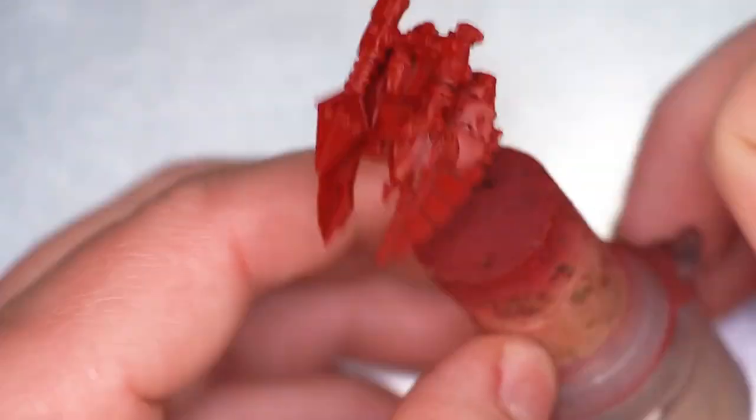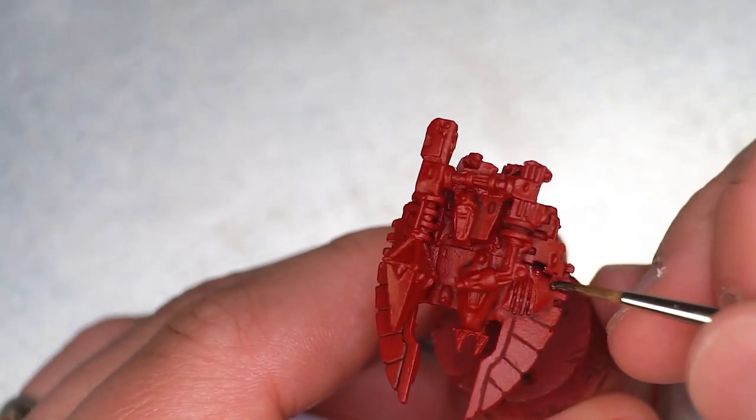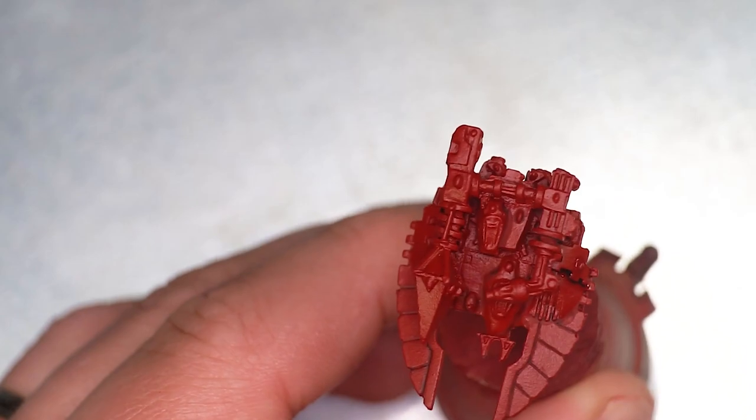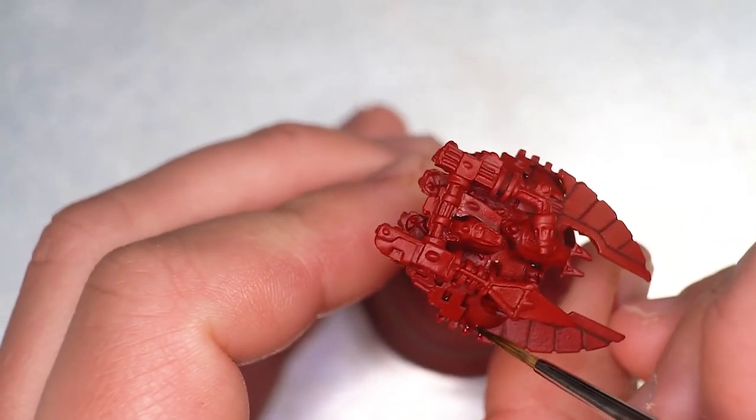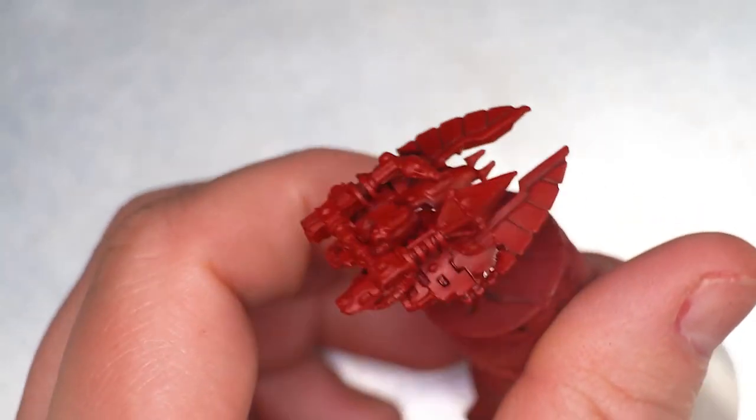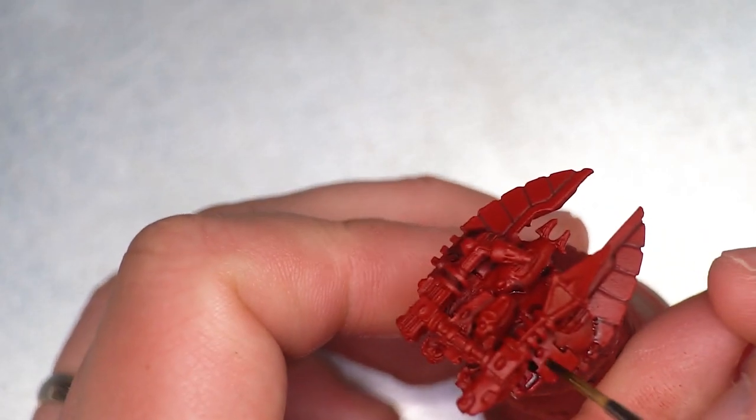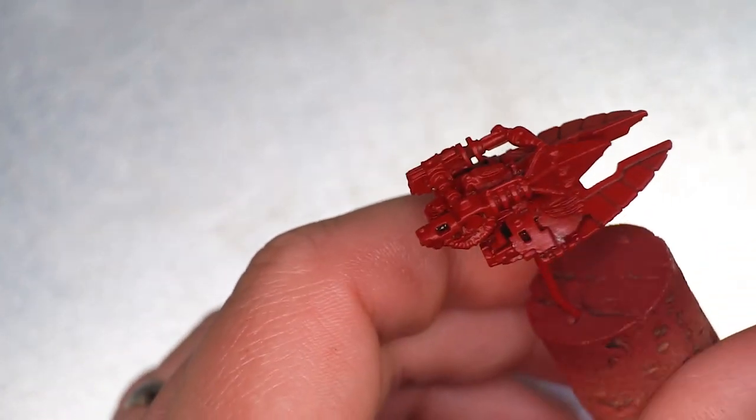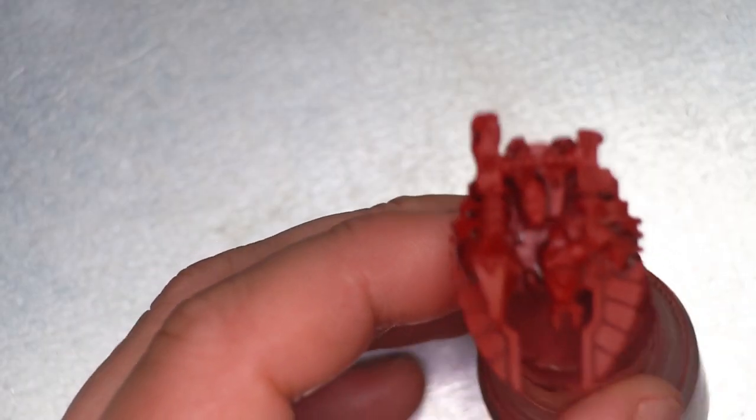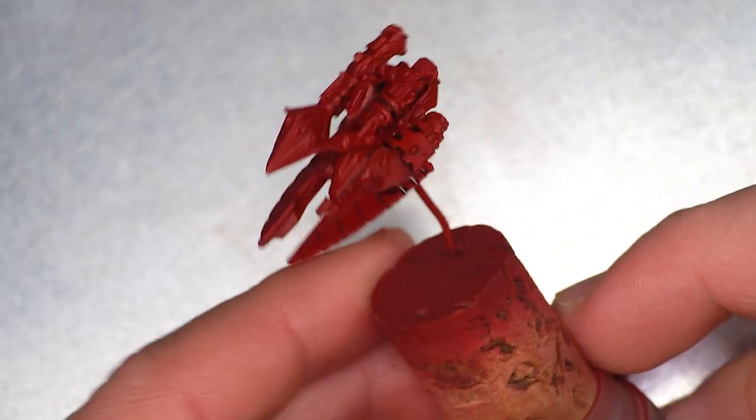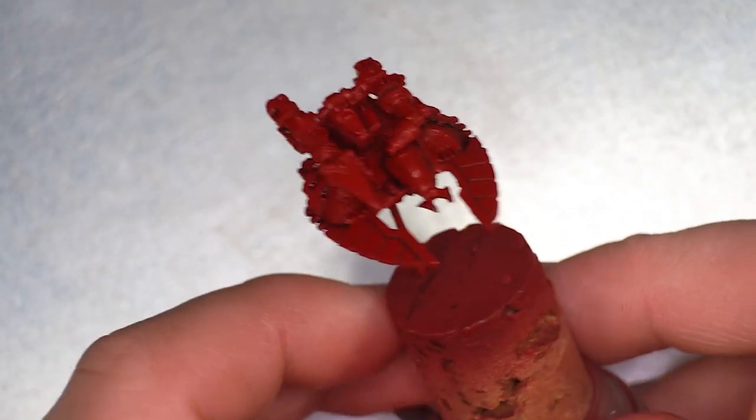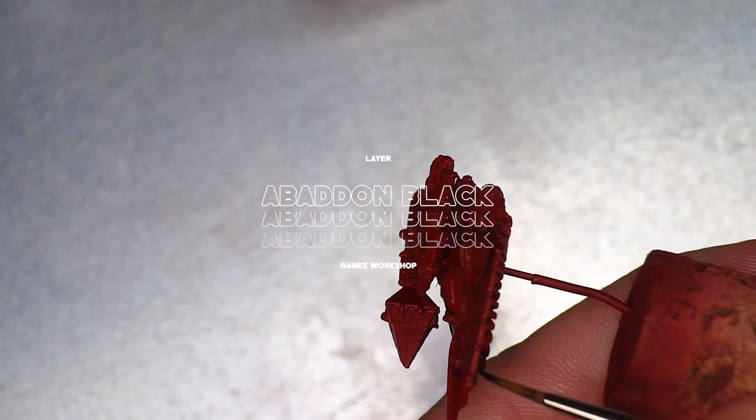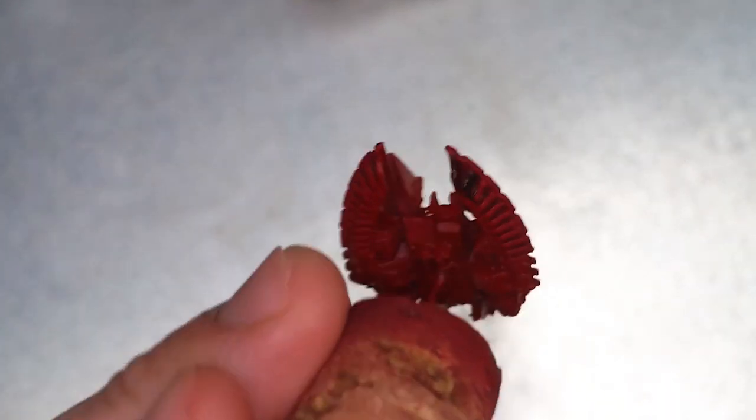Make sure you don't have too much Agrax Earthshade on your brush because you don't want to create water stains or pooling so just take your time. A couple of layers for the deep contour areas would be sufficient and if there are any mistakes you can always do very simple cleanup by going back in with flat red and then the transparent red layer to tidy up any areas where there could be potentially water stain marks from the Agrax Earthshade.